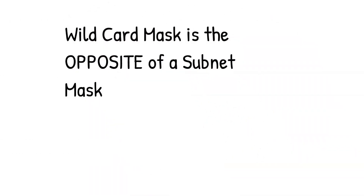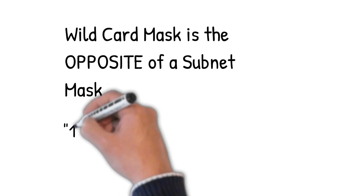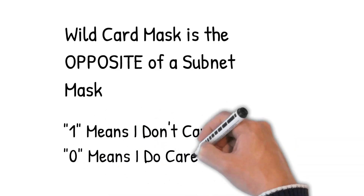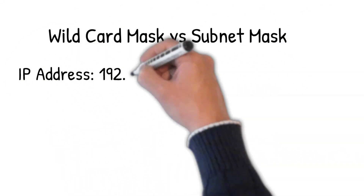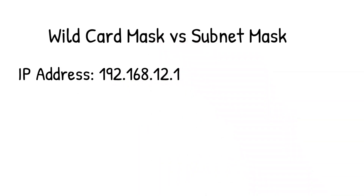With the wildcard mask, it does the same thing as a subnet mask except everything is the complete opposite. We still have certain bits that matter and certain bits we don't care about. However, with a wildcard mask, it's the zeros we care about and the ones we don't care about — so it's completely opposite from a subnet mask.